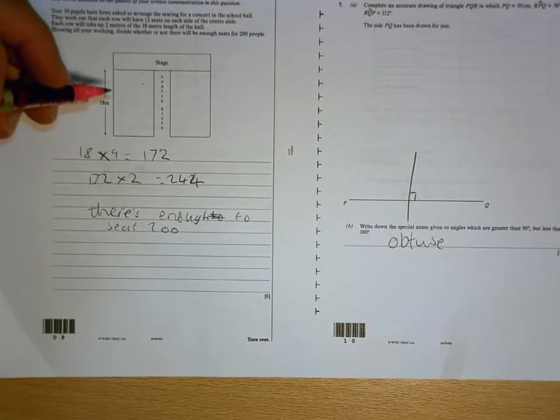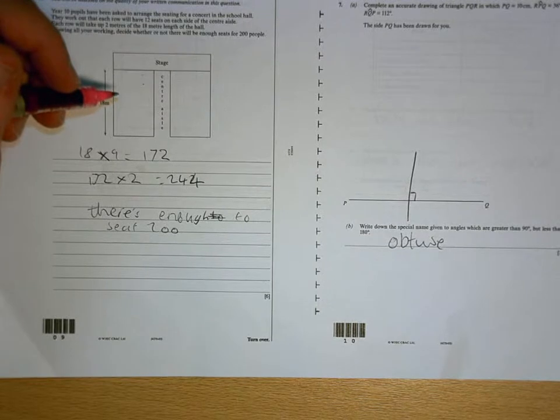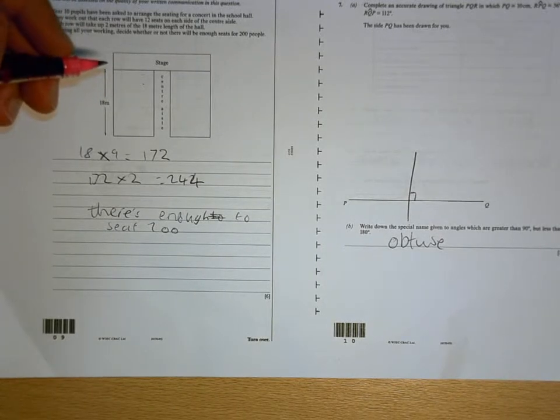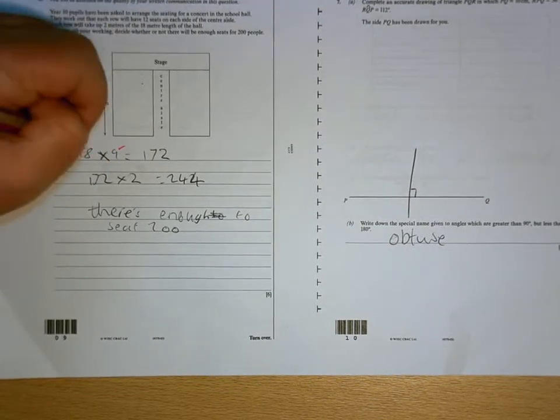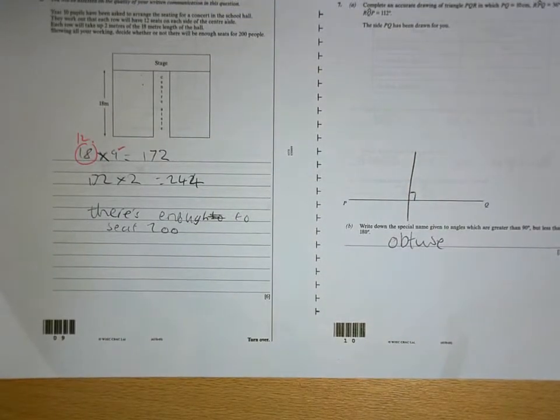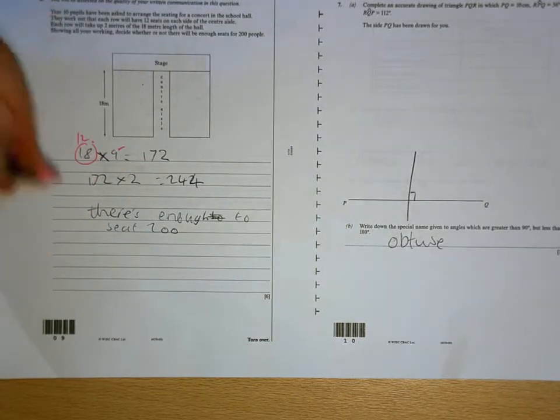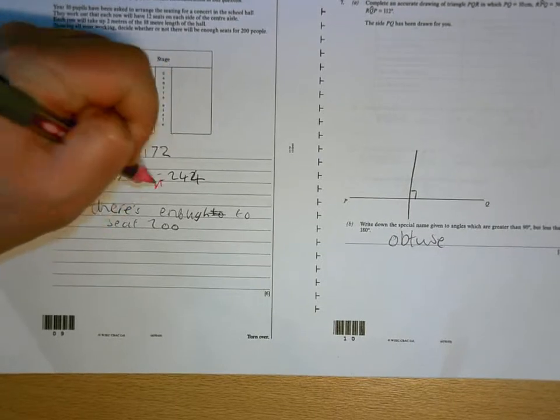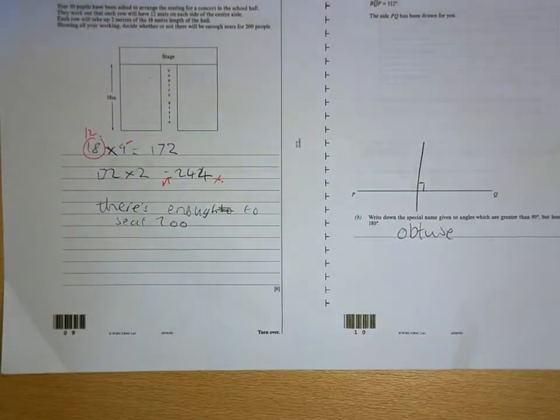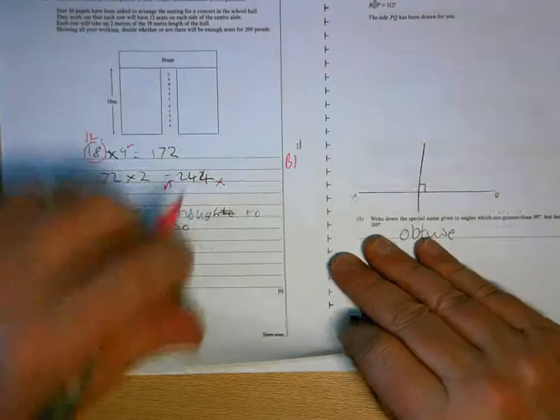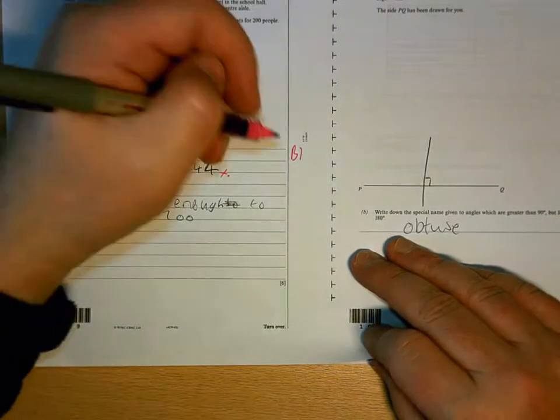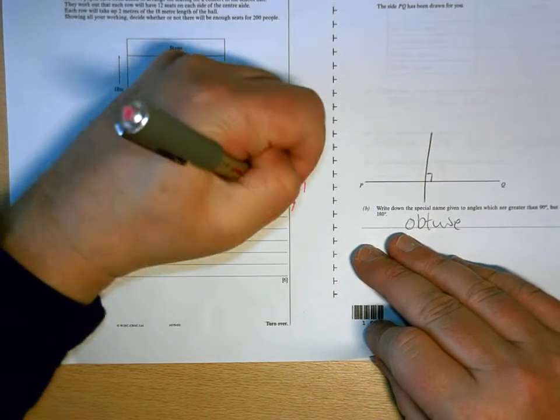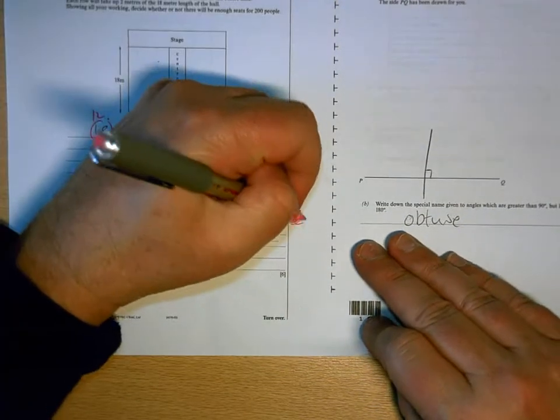So, there are 9 rows. Each row will have 12 seats. So, that's where your mistake is. There's no communication there whatsoever. You've correctly doubled your incorrect answer, but 172 times 2 is not 3,244. So, 1 mark for the 9 rows. Wrong number of seats. Doubling it is right, but you've worked it out incorrectly, and there's no communication at all.